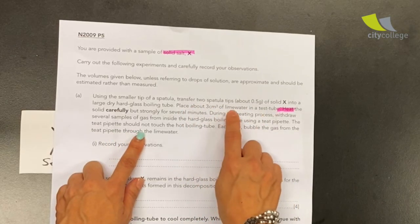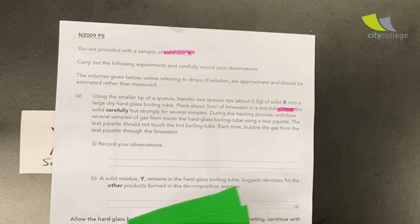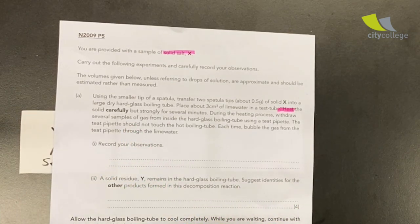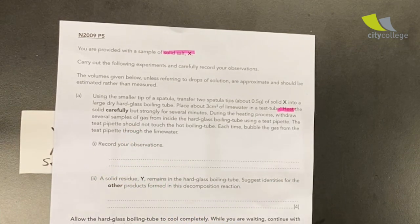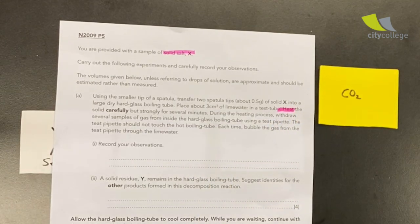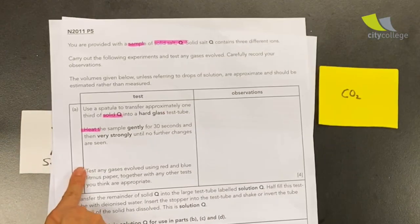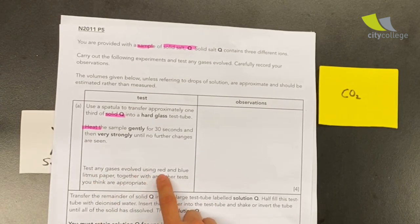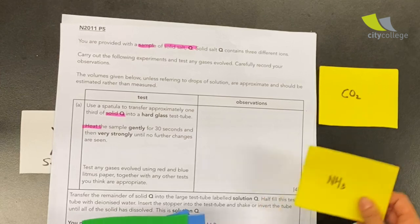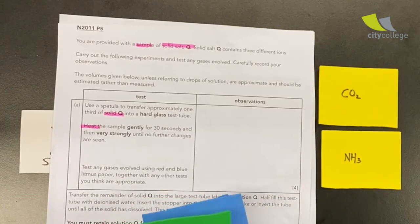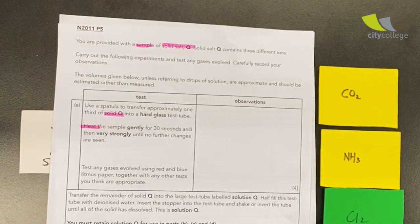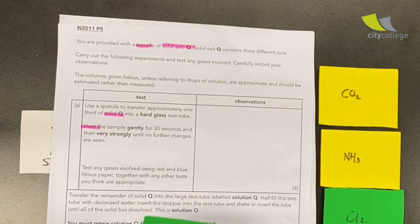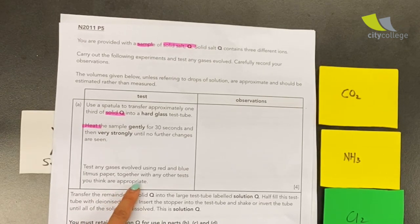2009 over here says use lime water, so I know immediately that they are testing for what gas? Carbon dioxide gas. 2011 they say test any gases evolved using the red and blue litmus paper. Well, immediately I would think about ammonia gas or even chlorine gas. And of course they say you can use any other tests that you think are appropriate.